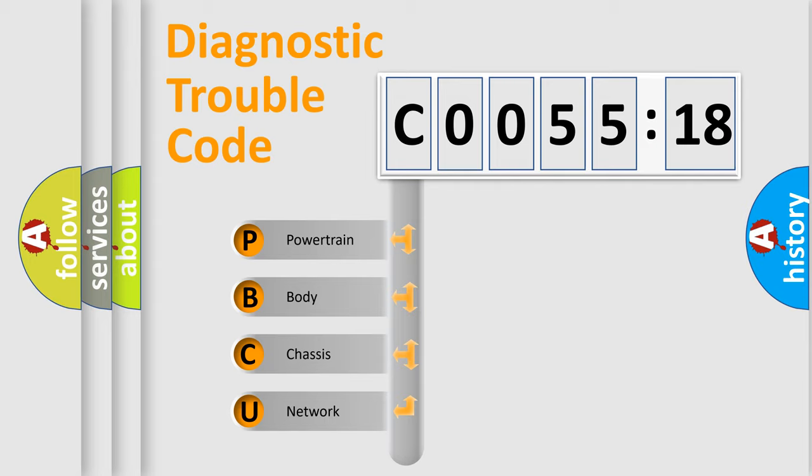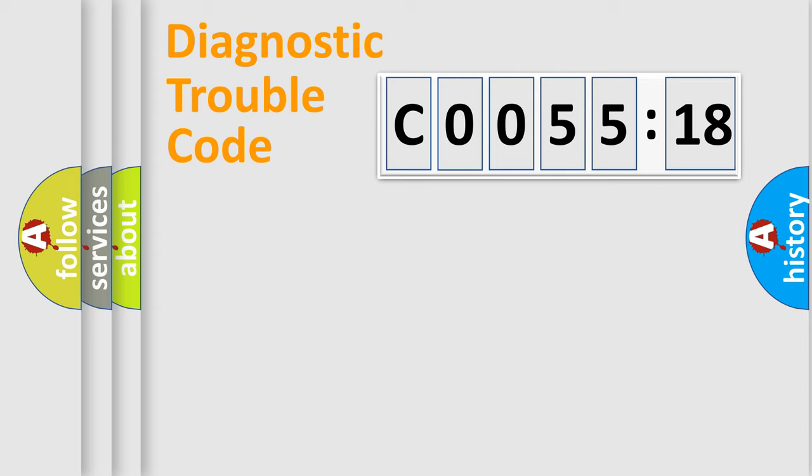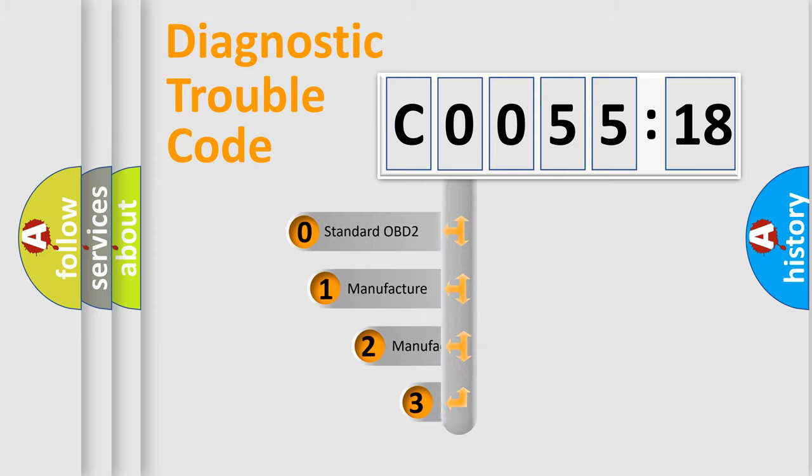We divide the electric system of automobile into four basic units: Powertrain, Body, Chassis, and Network. This distribution is defined in the first character code.